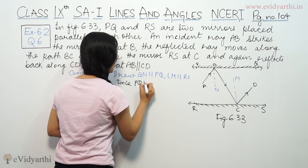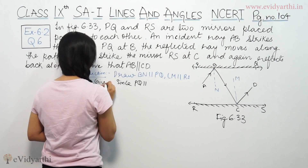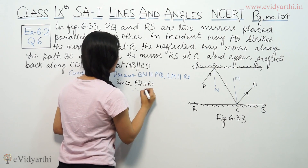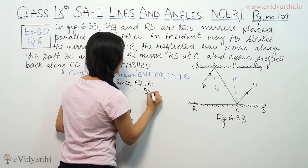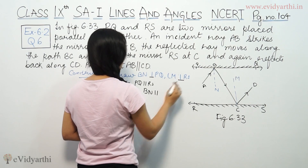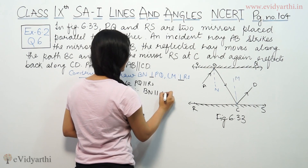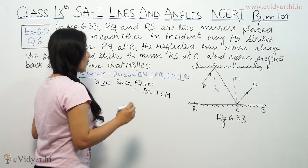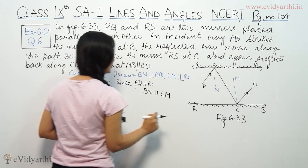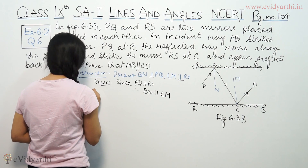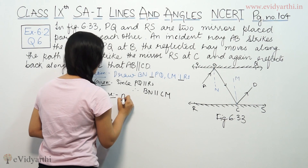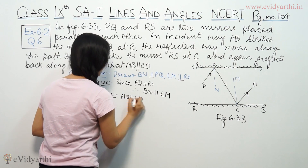Since PQ is parallel to RL — this is given — therefore BN is parallel to CM. AB is parallel to CM and CD is parallel to CM.